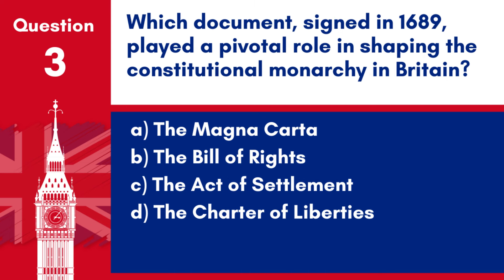Question 3. Which document, signed in 1689, played a pivotal role in shaping the constitutional monarchy in Britain? a. The Magna Carta. b. The Bill of Rights. c. The Act of Settlement. d. The Charter of Liberties. Answer: b. The Bill of Rights, signed in 1689, played a pivotal role in shaping the constitutional monarchy in Britain by outlining specific constitutional and civil rights.